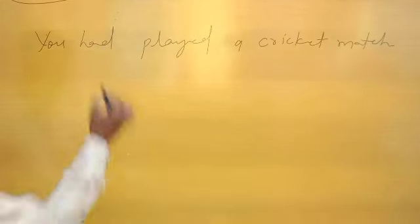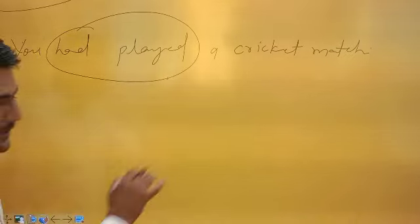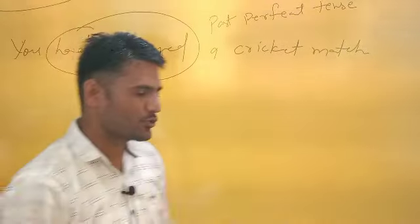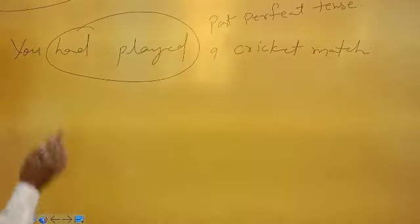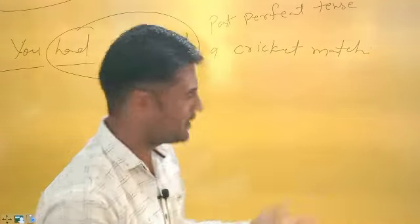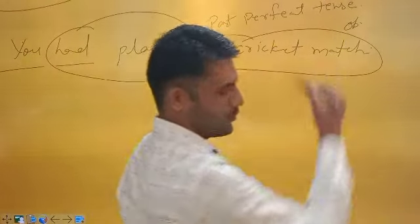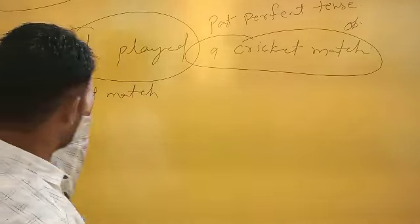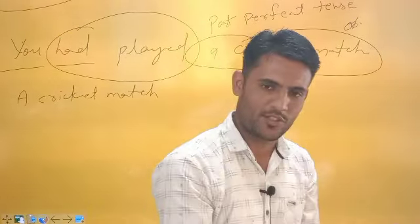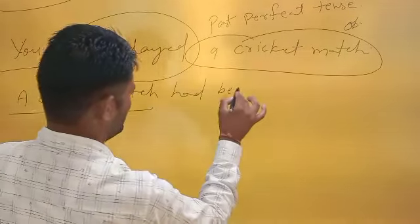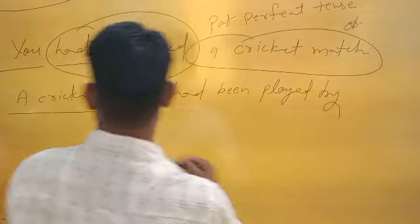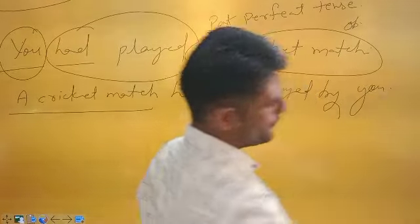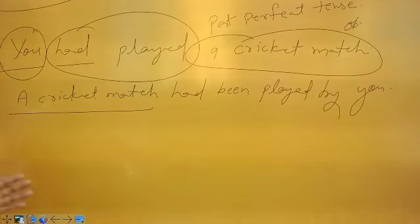Next example: 'You had played a cricket match.' 'Had plus third form' is the structure of Past Perfect Tense. Past Perfect passive changes to 'had been plus third form.' The object — answer to 'what had been played' — is 'a cricket match.' Make it the subject. 'Had' is used with both singular and plural subjects. So the passive is: 'A cricket match had been played by you.' The subjective and objective case of 'you' are both the same — 'by you.'